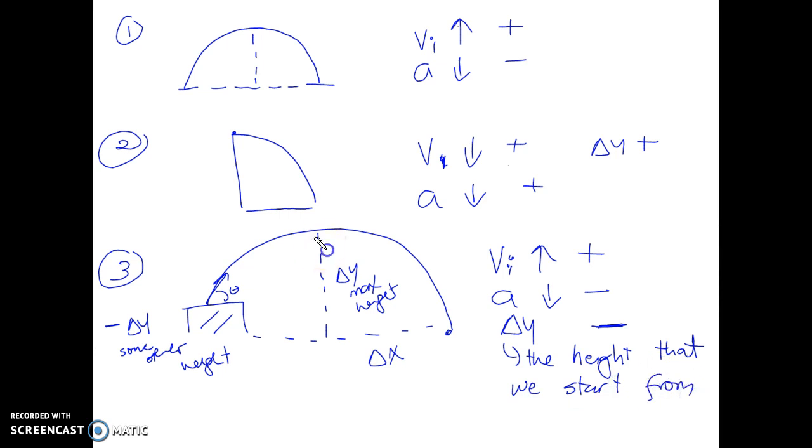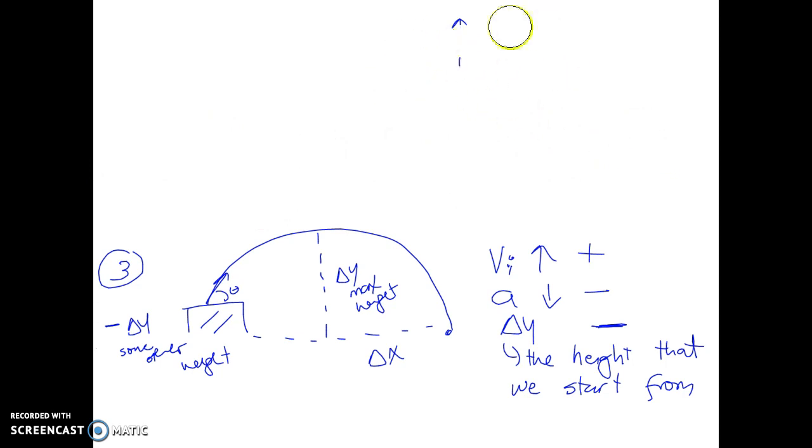And then we have the last situation which is very similar to the third one. In that, we are looking at an object that starts like so and ends up on some other height. So imagine you throw a ball and it ends up on the roof of a house, for example. There will be your delta y right here, this is your maximum height.